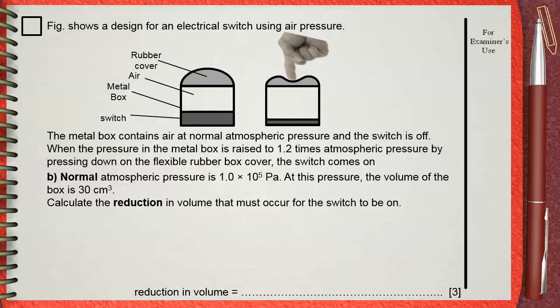As usual, for any calculation, let's find out our givens. We have the normal atmospheric pressure without pressing the rubber cover. This is 1.0 times 10 power 5 pascals. For this pressure,